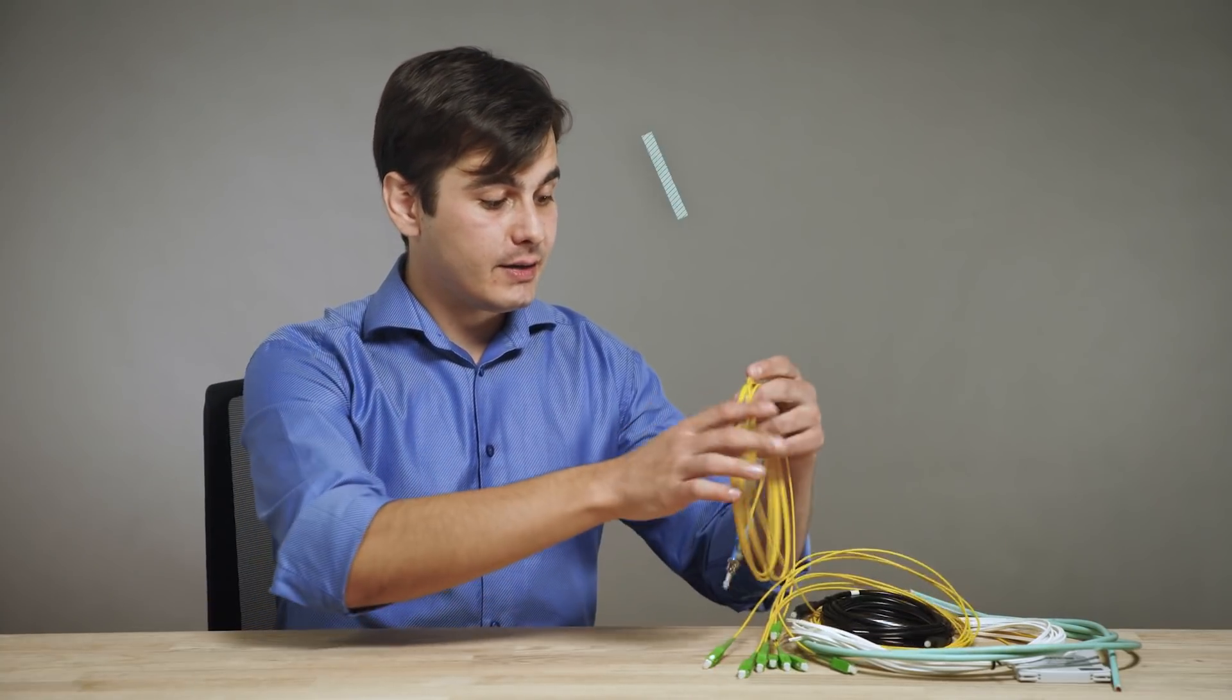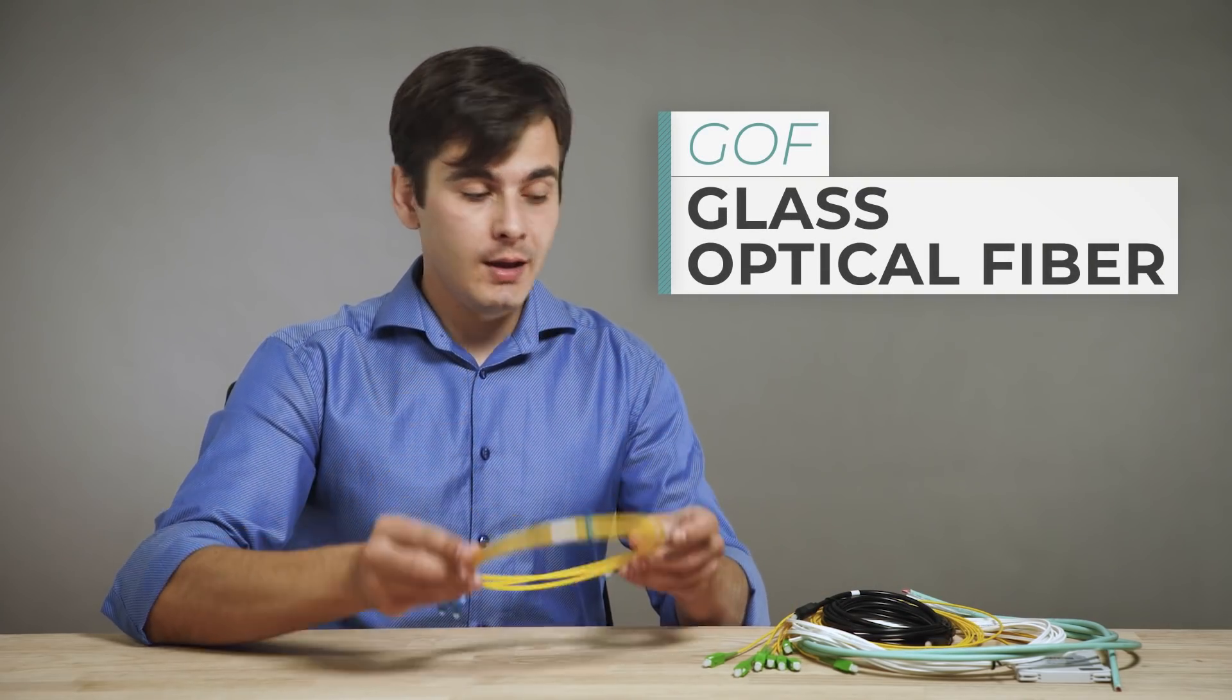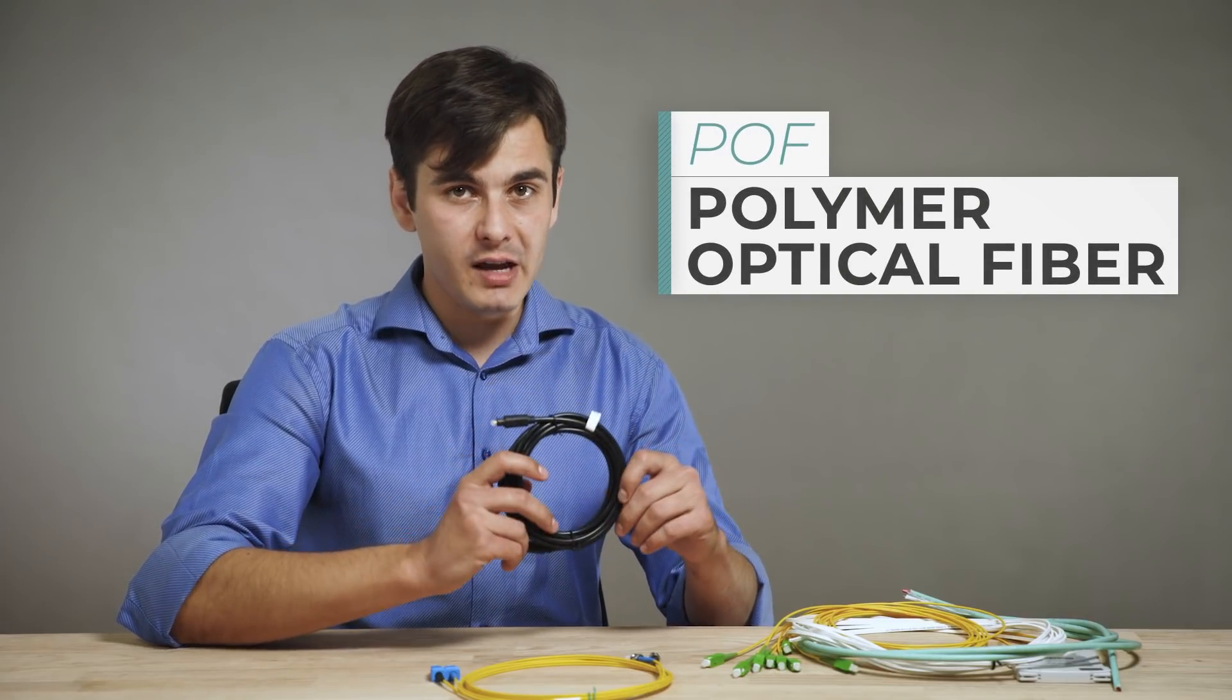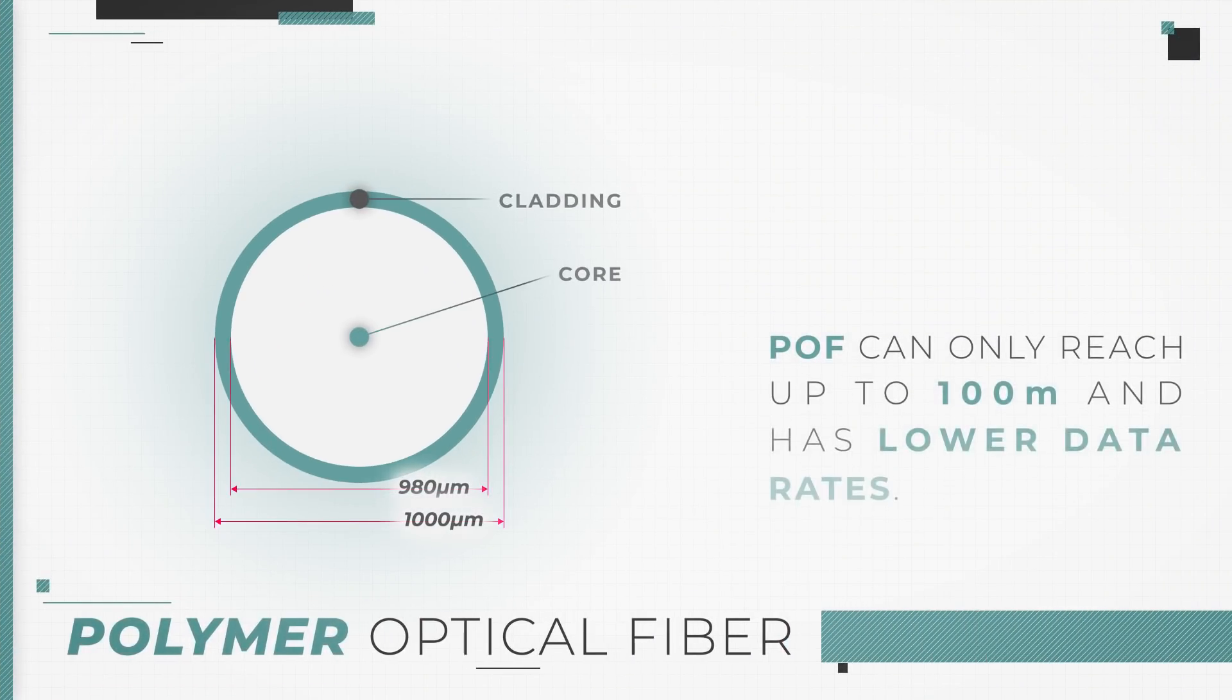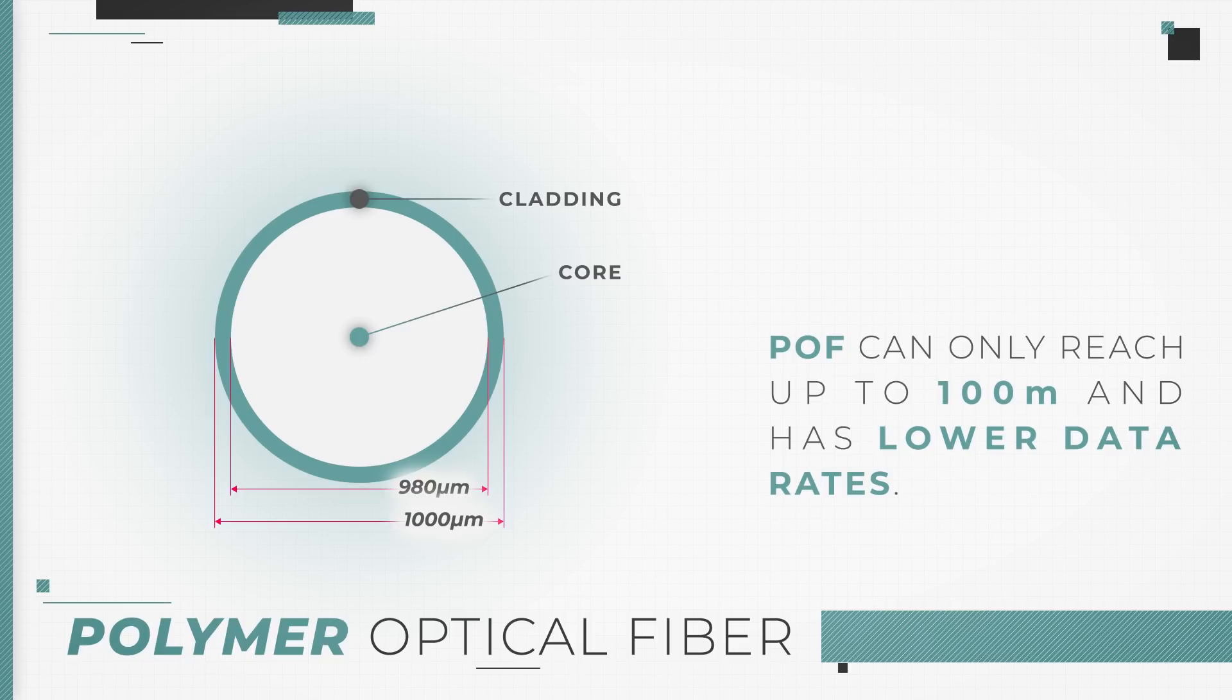The single-mode and multi-mode that we mentioned so far are made of glass and can be referred as GOF, glass optic fibers. Another version that we have here is POF, polymer optic fibers. This type of fiber has a much larger core cladding dimensions and therefore can reach only 100 meters and has very low data rates.